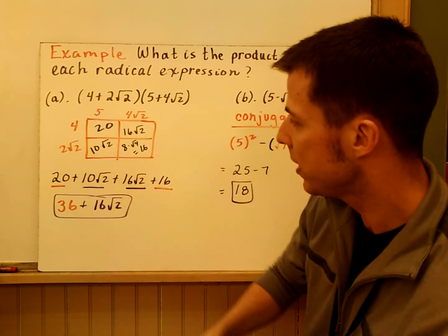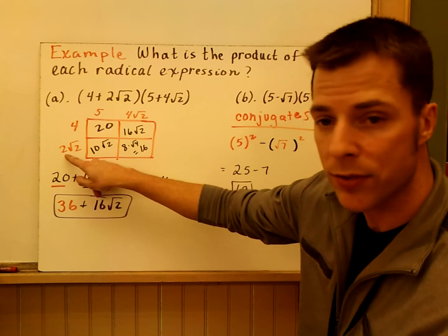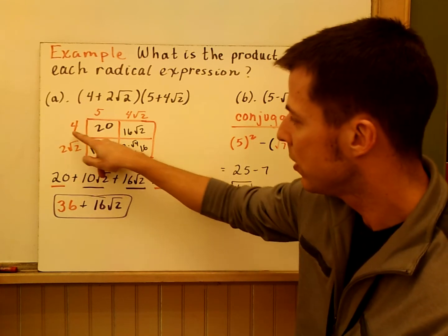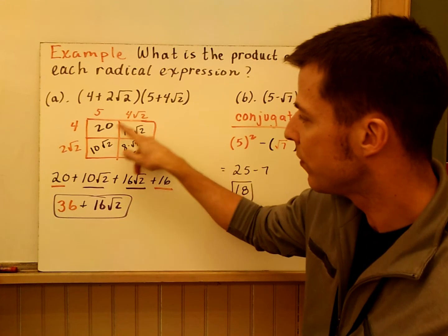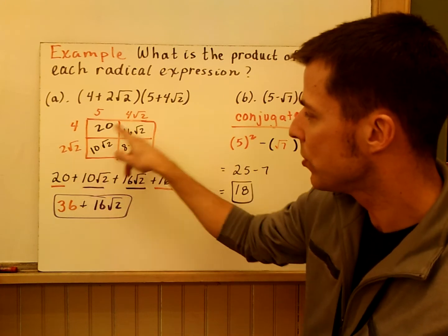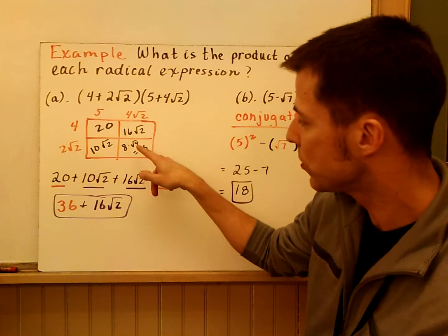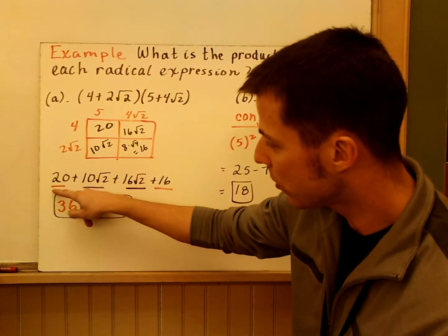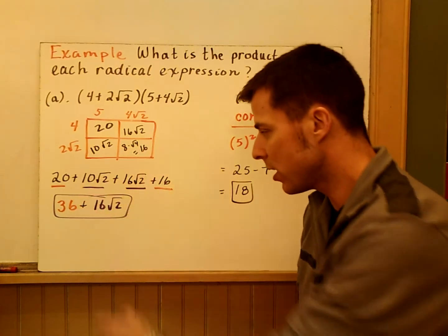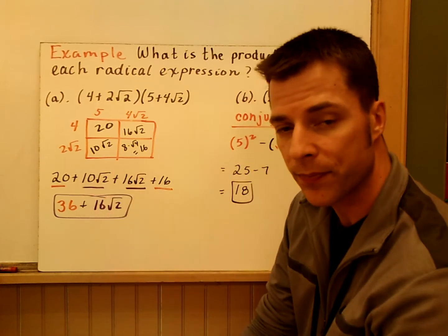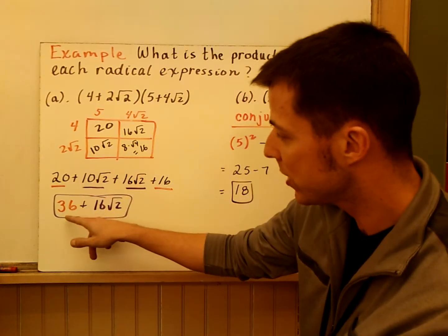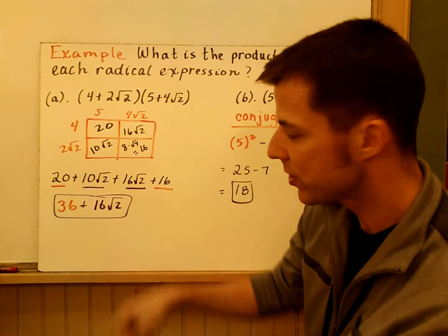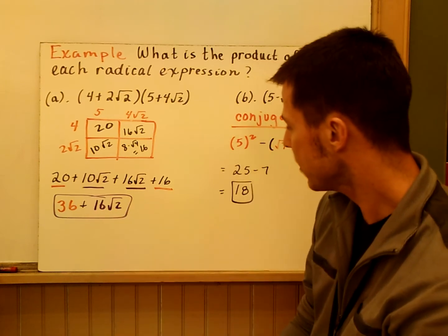5 times 4 is 20. Then you have 5 times 2 root 2, which is 10 root 2. 4 times 4 is 16 root 2. And 4 times 2 is 8. Root 2 times root 2 is root 4, which becomes 2. So 8 times 2 is 16. I wrote all my terms here and then I color coordinate them to say, okay, well, 20 and 16 make 36 plus 16 root 2.